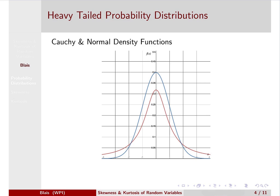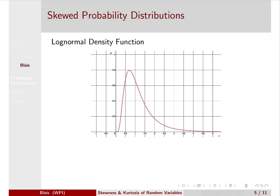We also have this idea of a skewed probability distribution. Here's an example — this is the density function for the log-normal distribution. We would call this a right-skewed distribution because you can think of it as having pulled on the right tail. We have probability mass going out into the right tail that you don't see in the left tail.